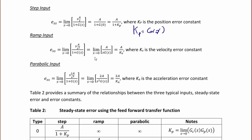This simplifies to the limit as S approaches 0 of A over S·G(S). So KV is the limit as S approaches 0 of S·G(S). The parabolic input gives S² over A·S³ over 1 plus G(S), which simplifies to 2A over S²·G(S), or 2A over KA, where KA is the limit as S approaches 0 of S²·G(S).